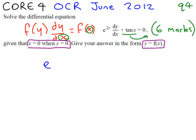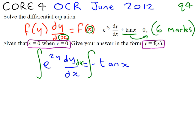So we've got e to the 2y, dy/dx, and we're going to take away tan x from both sides of the equation. What this does is it allows us to integrate both sides of the equation. That's okay because we're doing the same to both sides, which we're allowed to do. Because we're integrating and it's a negative, we can move the integral sign into the negative — it just makes things a little bit easier and makes sure you don't get confused.